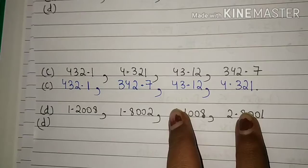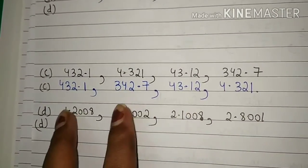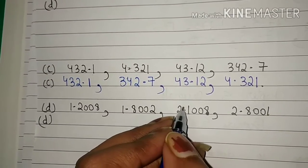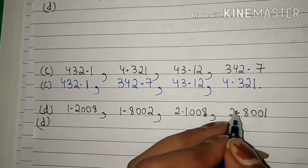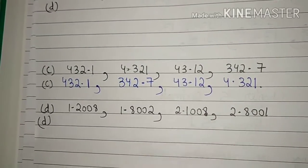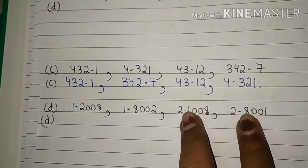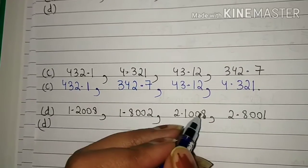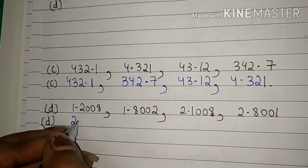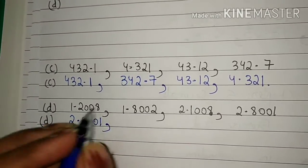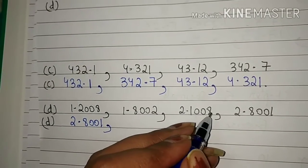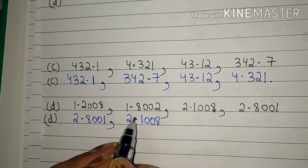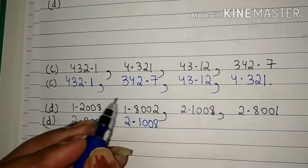We will compare the two numbers with 2 before the decimal point. Now we compare the digits after the decimal point: 1 and 8. Which is the greatest? 8. So 2.8001 is the greatest number among all the others. We will write here 2.8001. After that we will write 2.1008, because 2.1008 is greater than the other two remaining numbers.